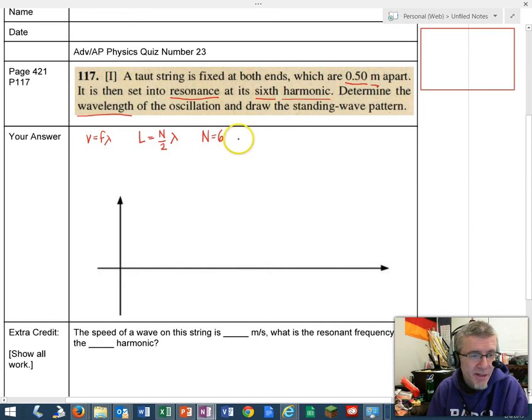The first harmonic is also called the fundamental. So this is basically five octaves above the fundamental. The question is, what is wavelength? So lambda equals what?